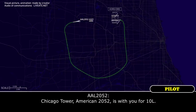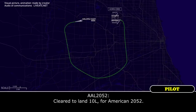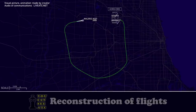O'Hare Tower, American 2052 is with you for 10 left. American 2052, tower, traffic departing, ILS arrival on 10 left, clear to land, winds 140 at 6. Clear to land 10 left, American 2052.